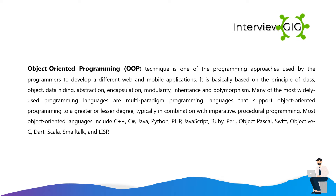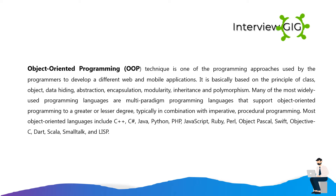Many of the most widely used programming languages are multi-paradigm programming languages that support object oriented programming to a greater or lesser degree, typically in combination with imperative, procedural programming. Most object oriented languages include C++, C#, Java, Python, PHP, JavaScript, Ruby, Perl, Object Pascal, Swift, Objective-C, Dart, Scala, Smalltalk, and Lisp.